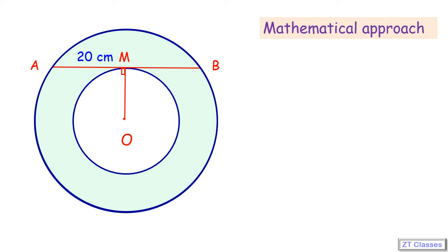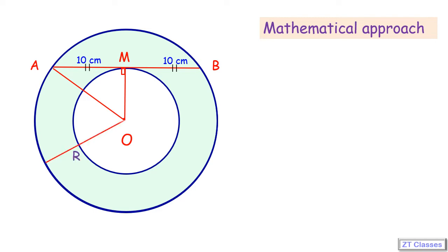With respect to the inner circle, AB is a tangent and OM is a radius on the tangent, which is perpendicular. Now with respect to the outer circle, AB is a chord, and the perpendicular drawn from the center divides the chord into two equal parts, so AM and MB will be 10 cm each. Let's join AO, so our triangle AOM is a right-angle triangle. AO is the same as the radius of the outer circle and OM is the same as the radius of the inner circle.